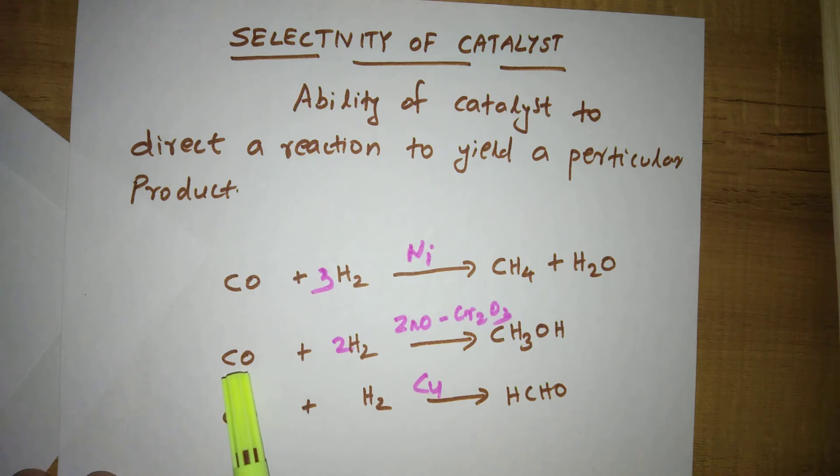If I use zinc oxide and chromium oxide as catalysts, I will get CH3OH, methanol. If I use copper as catalyst, I will get formaldehyde, HCHO.